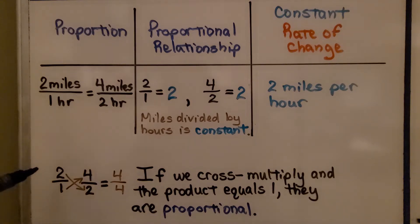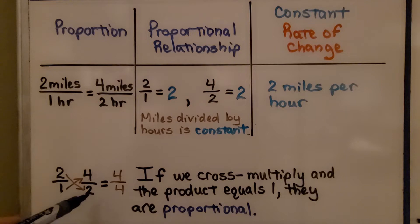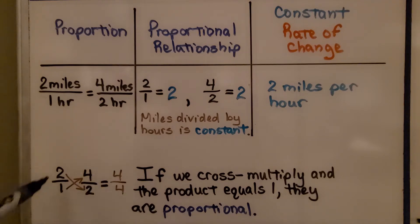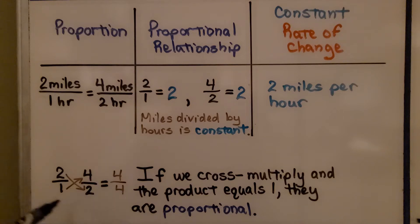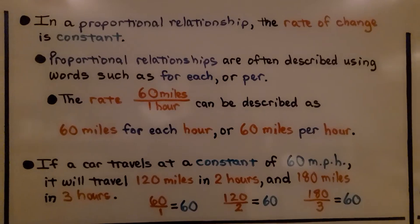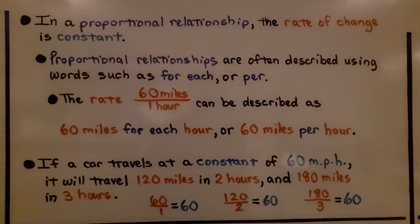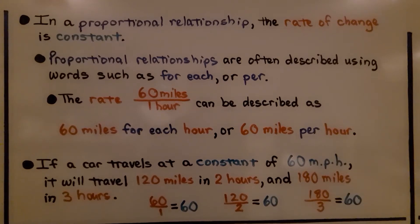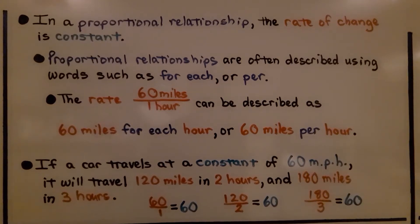If we cross multiply and the products are equal, they're proportional. We cross multiplied: two times two is four, and one times four is four — same numerator and denominator, so it's proportional. In a proportional relationship, the rate of change is constant — it stays the same.